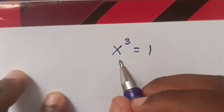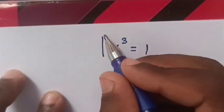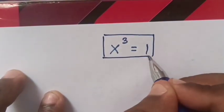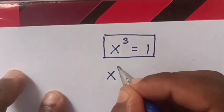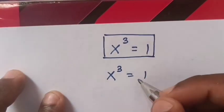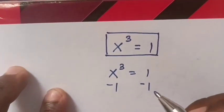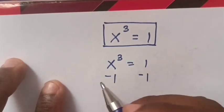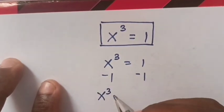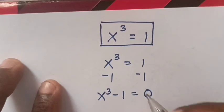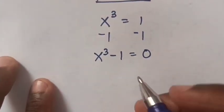Hello. How to solve x³ = 1. Now to find the value of x from this equation, x³ = 1, we subtract 1 from both sides so as to move 1 to the left side. So it will be x³ - 1 = 0. Now factors of x³ - 1 are...